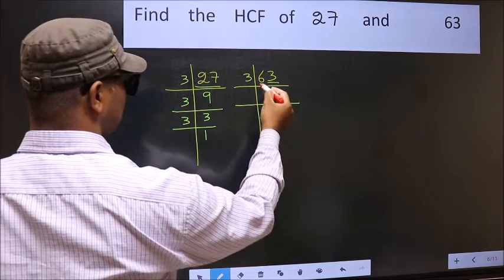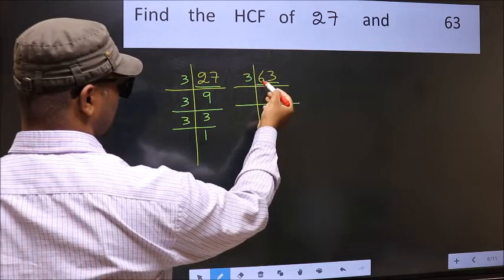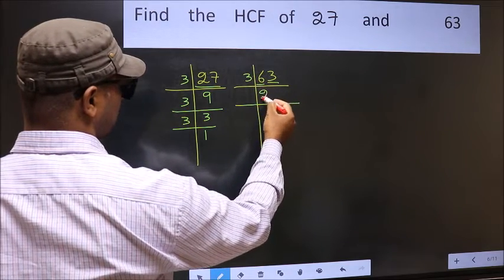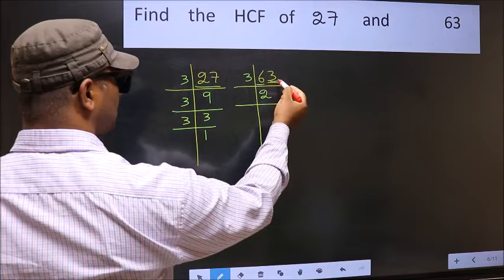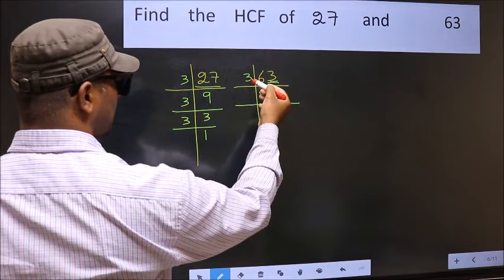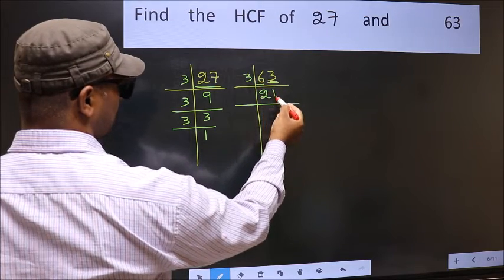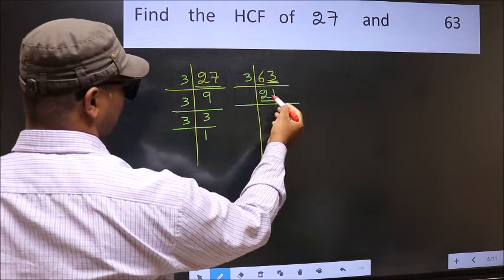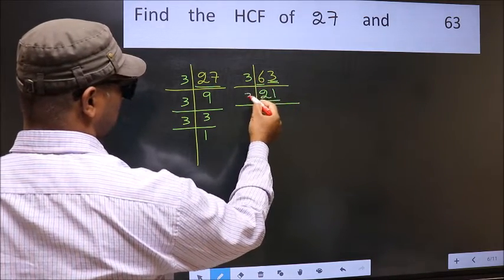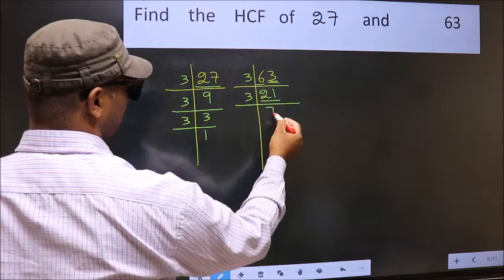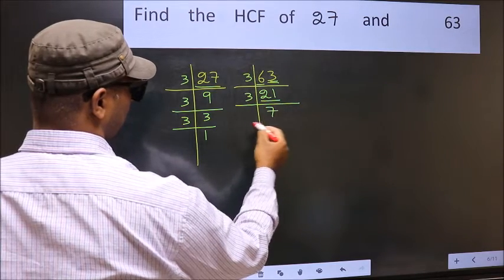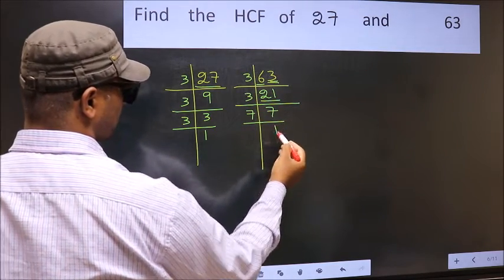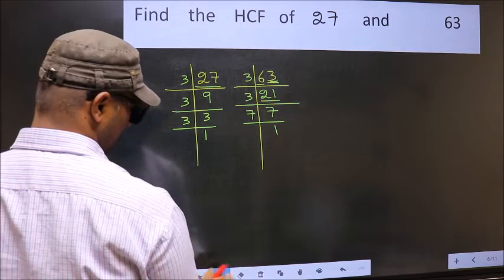So take 3. The first number is 6 — when do we get 6 in the 3 times table? 3 times 2 is 6. The other number is 3 — 3 times 1 is 3. Now 21 is 3 sevens — 3 times 7 is 21. 7 is a prime number, so 7 times 1 is 7.